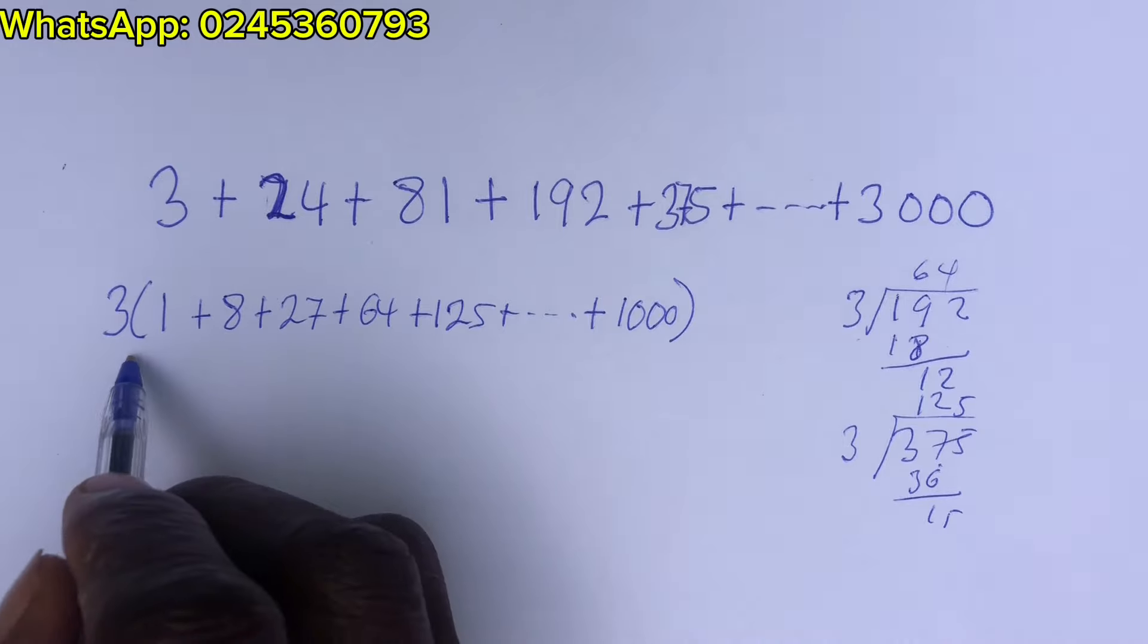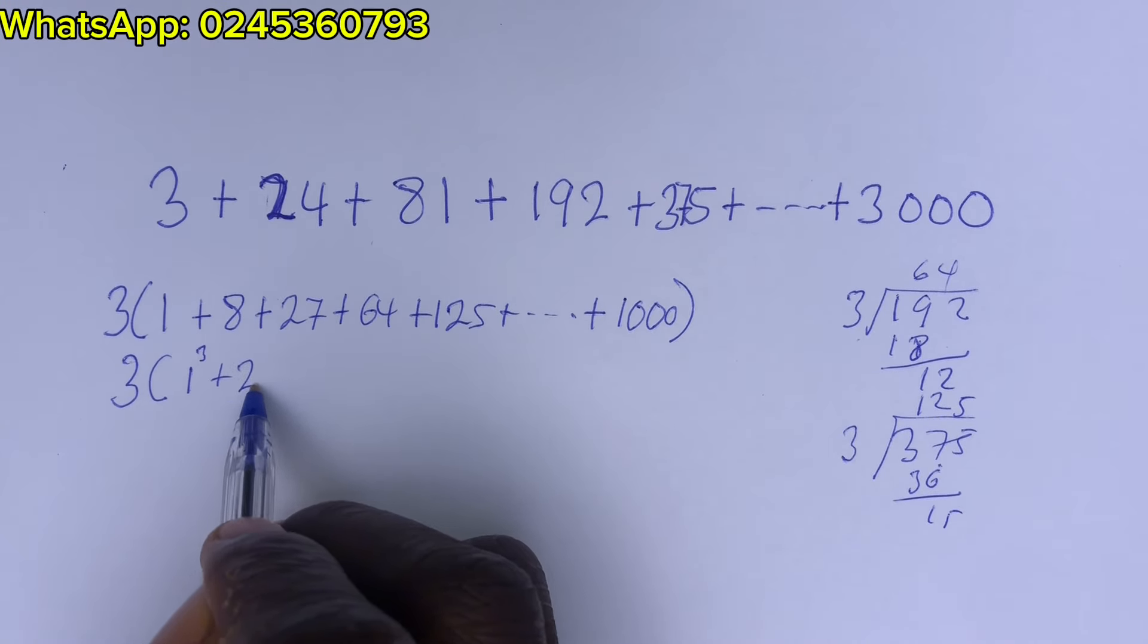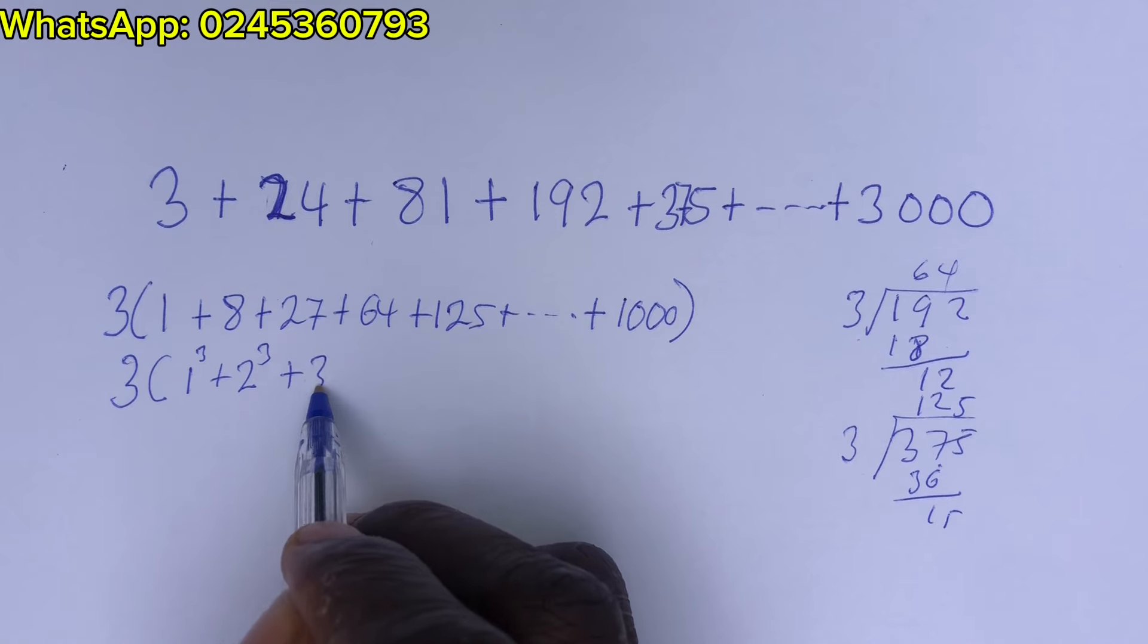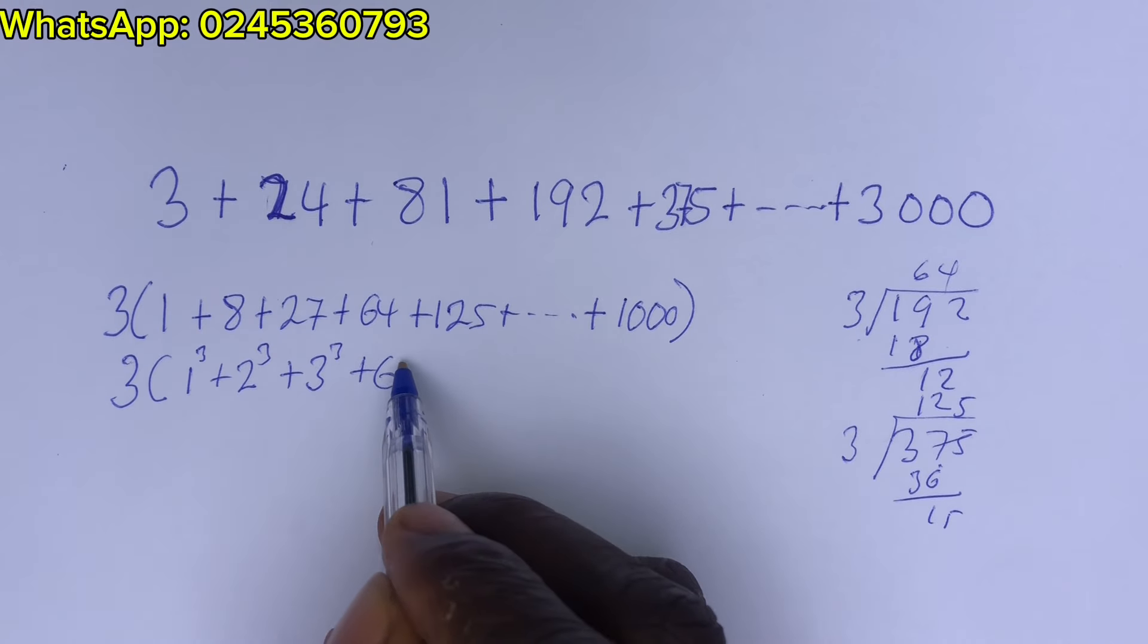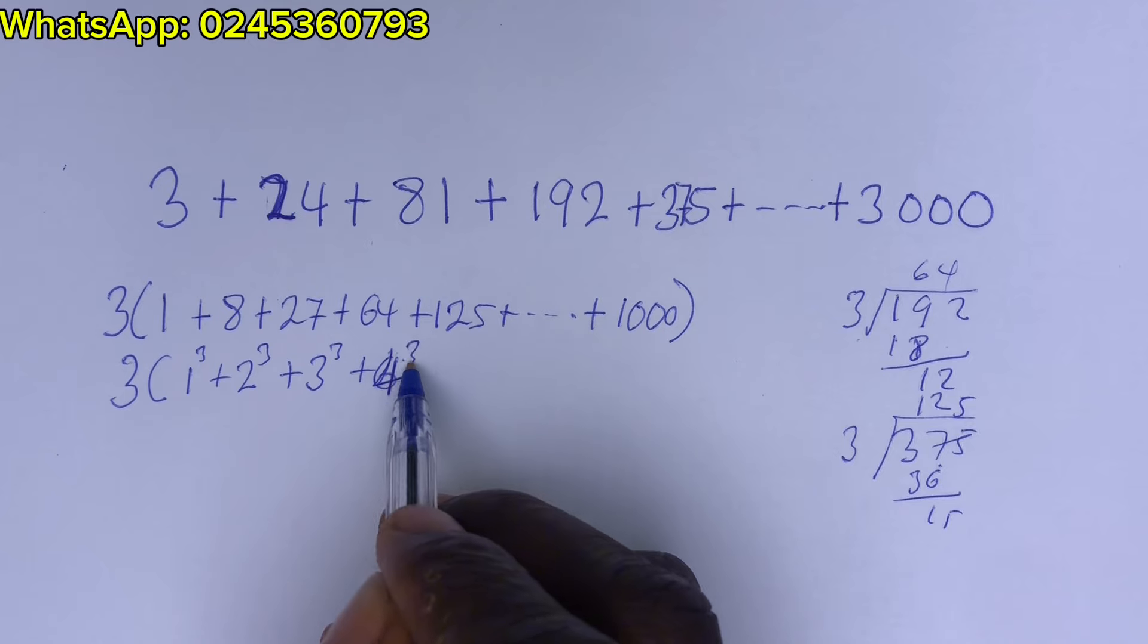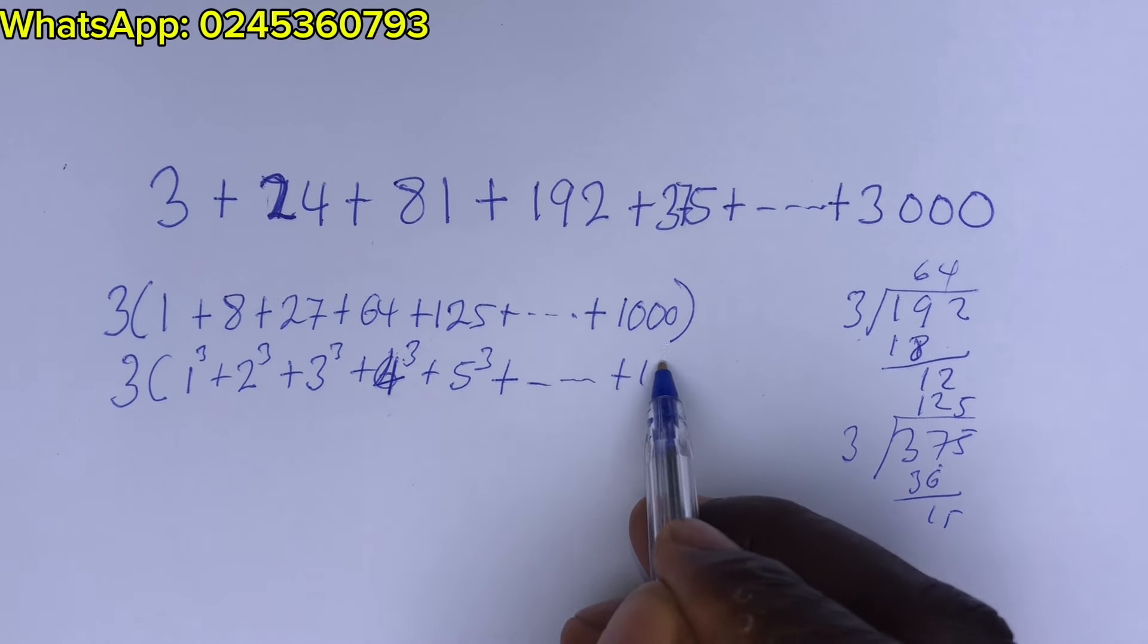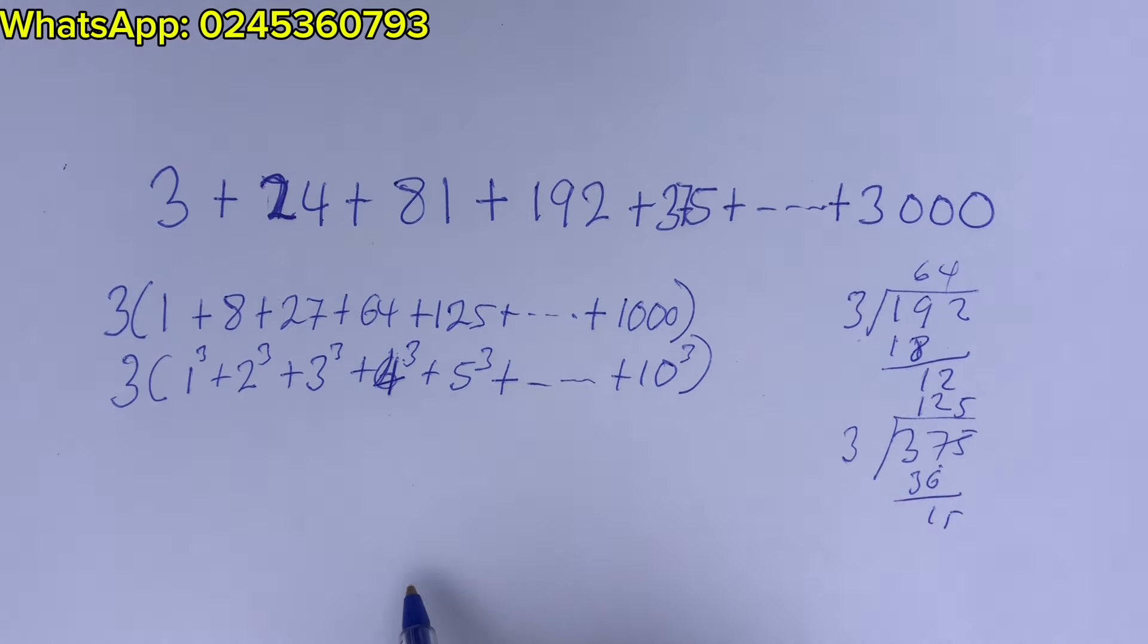And this is 10 cube. So we can write this one as 3 into 1 cube plus 2 cube plus 3 cube plus 4 cube plus 5 cube plus 10 cube. Wow.